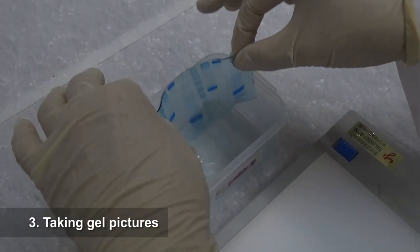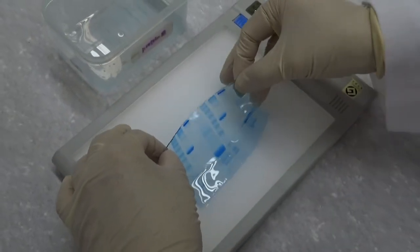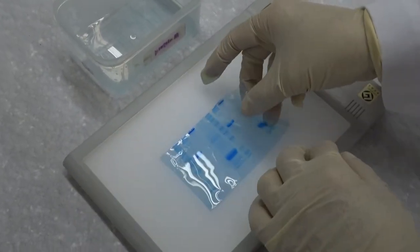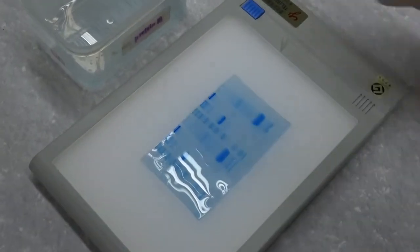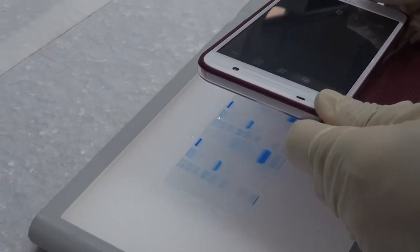Taking gel pictures. Pour away the water after washing. Pull the gel by hand to allow excess water to drip away and spread the gel on a light box. Turn on the light. Take gel pictures using a cell phone or camera.